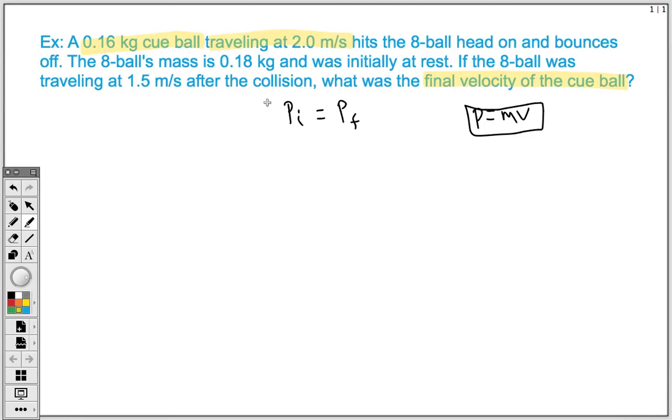And then on the other hand, we have the 8 ball. And we know that the 8 ball's mass is 0.18 kilograms. It was initially at rest, so therefore it was not moving. And then after the collision, it was traveling at 1.5 meters per second.